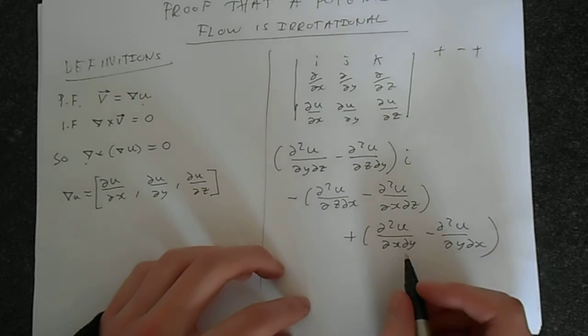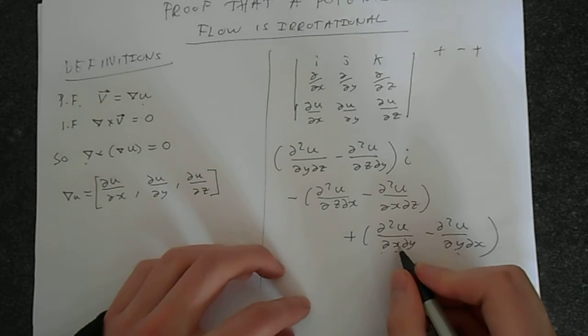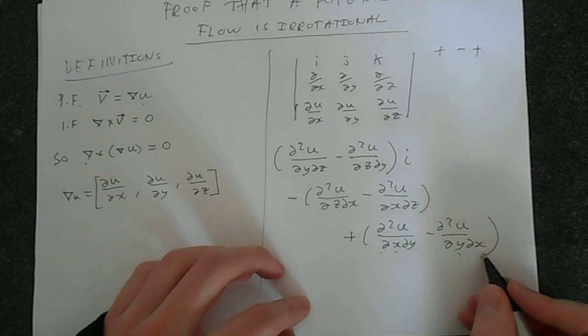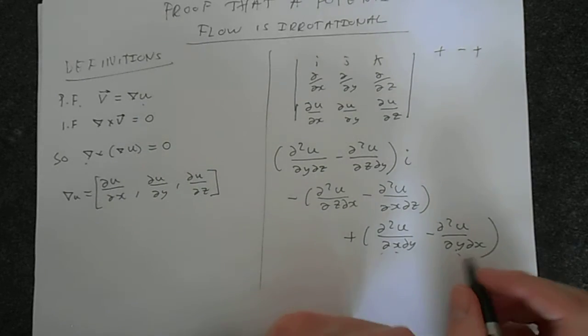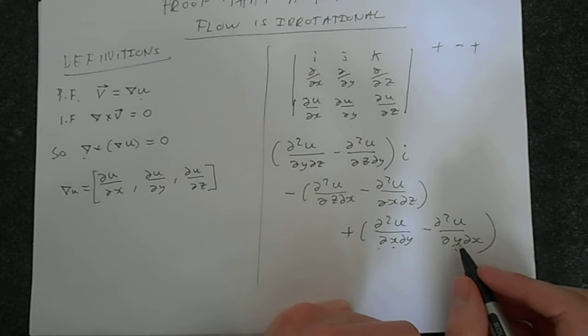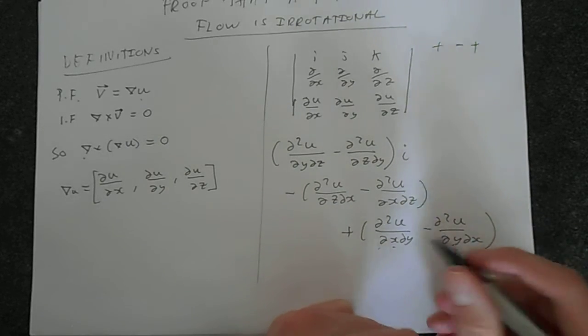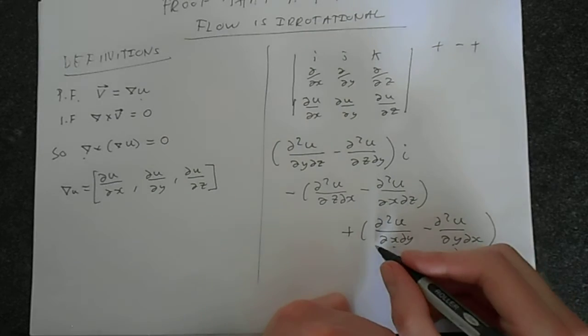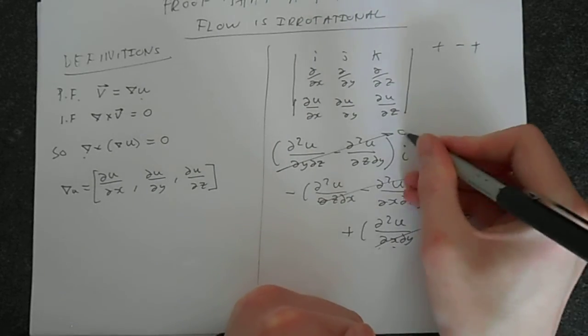Now, you'll notice that these are sort of the same thing. You've got delta x delta y, and delta y delta x. If you assume that these are the same thing, so a continuously differentiable function, we can say, well, that's going to be 0, that's going to be 0, that's going to be 0.